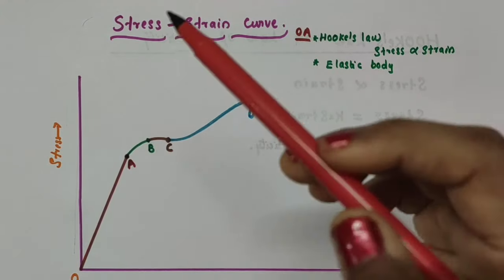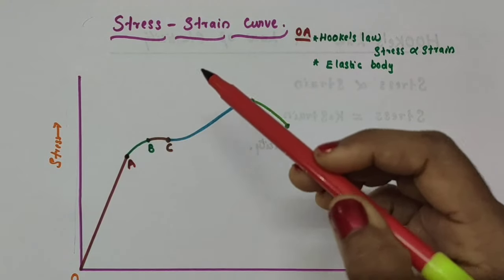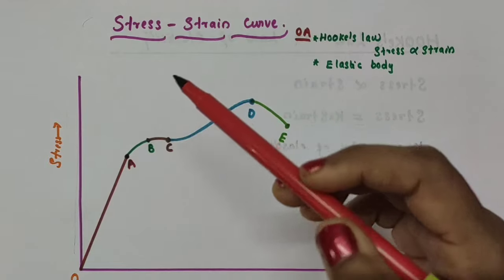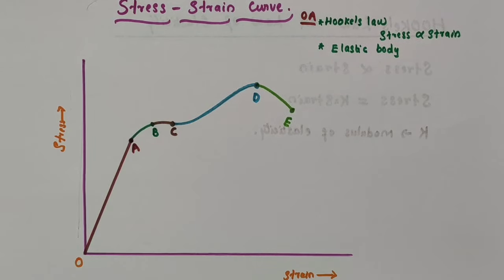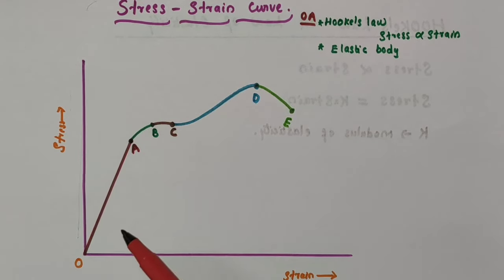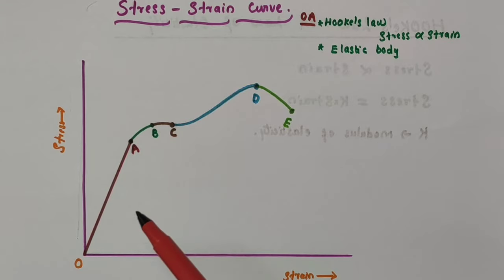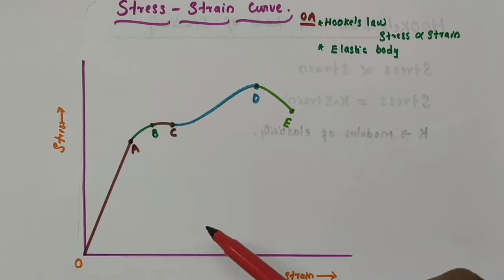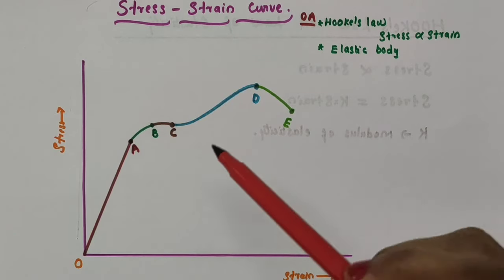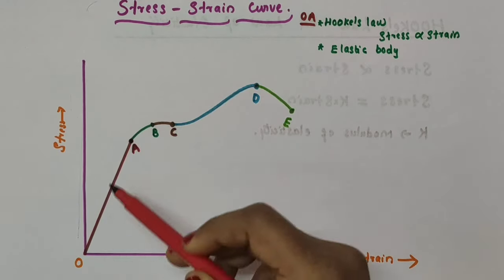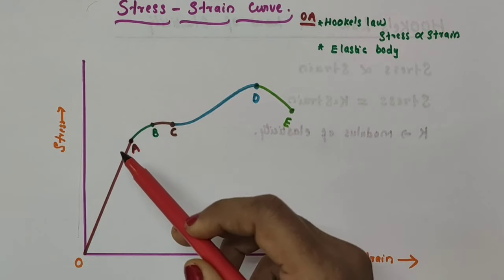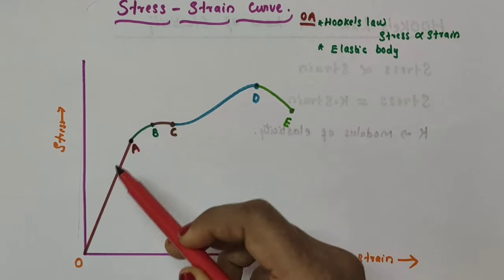Depending upon the material, the stress-strain curve can indicate key properties including its elastic region, plastic region, yield point, etc. Here you can see a typical stress-strain curve for a metal. Stress is marked along the vertical axis and strain is marked along the horizontal axis. This stress-strain graph has different points or regions. In the region between O and A, the stress-strain curve is linear — it is a straight line.